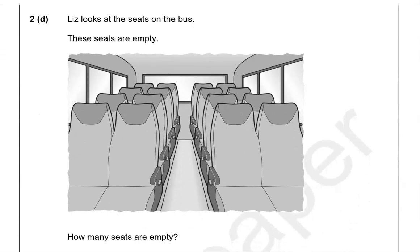Leist looks at the seats on the bus. These seats are empty — how many seats are empty? Counting: one, two, three, four, five, six, seven, eight, nine, ten, eleven, twelve, thirteen, fourteen, fifteen, sixteen. So there are sixteen empty seats.